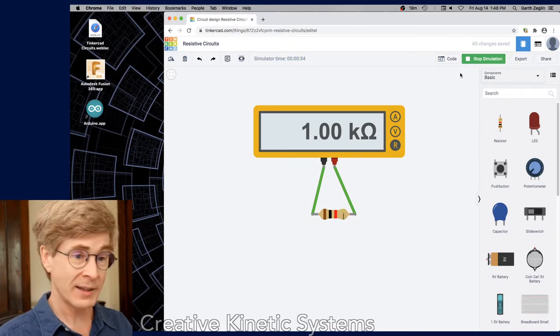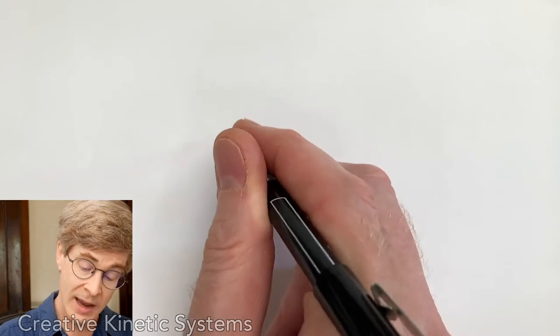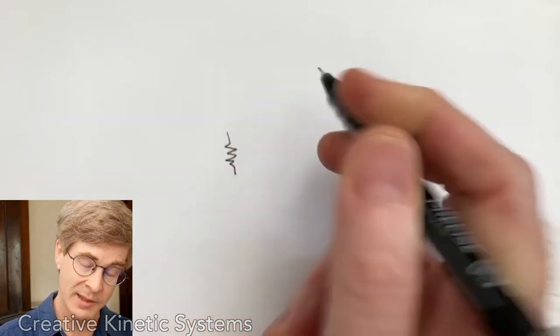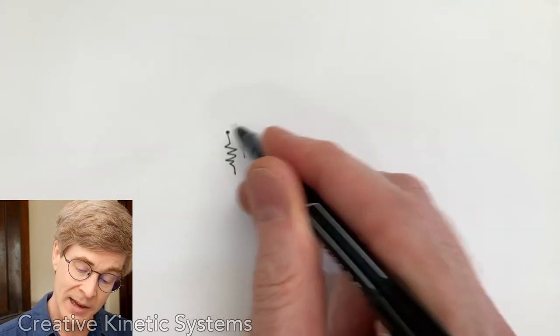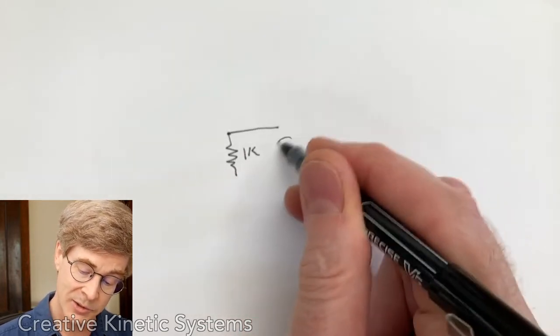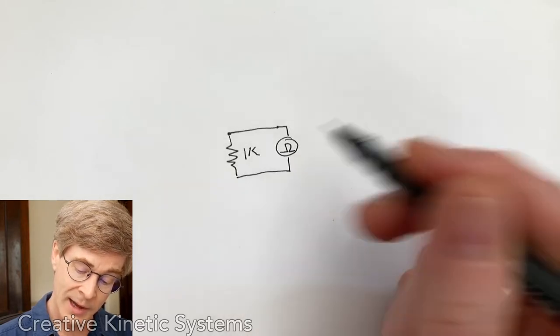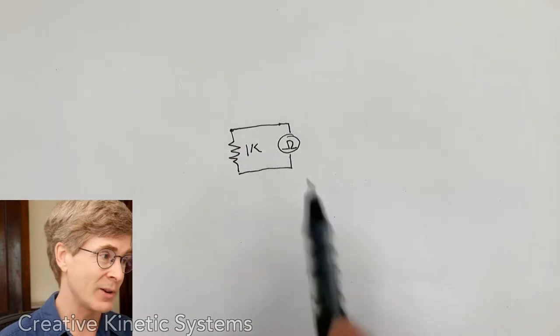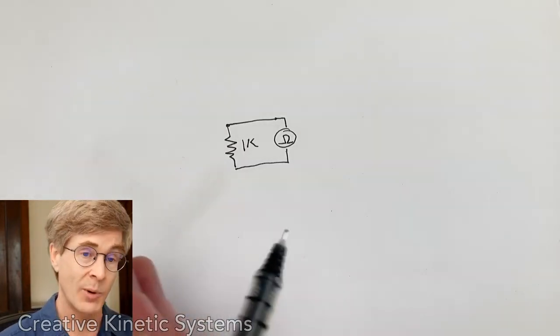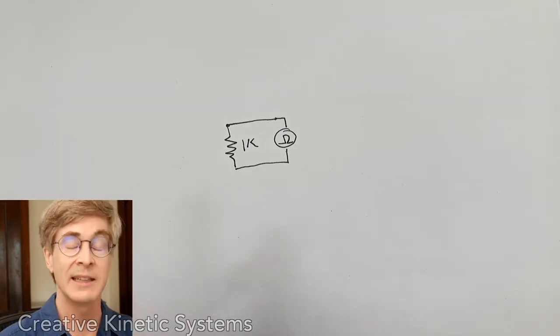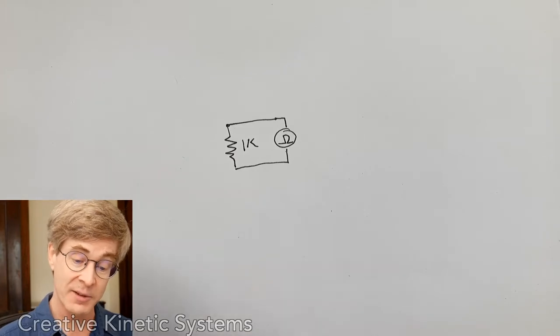So in practice, when we actually try to draw this out, what this is going to look like is we have a resistor, and the universal resistor symbol is this kind of zigzag line, and I'm going to put a value on it, 1K. And I'm going to show that the two terminals, one terminal is connected to one side of an ohmmeter, and the other side to the other side of the ohmmeter. The ohmmeter is this active component that is applying energy to the component in order to measure its properties, which is distinctly different from the voltage and current readings.